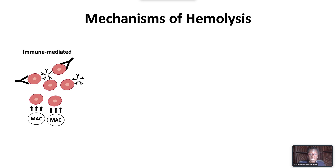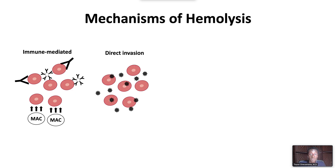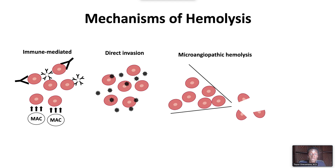Hemolysis can be immune-mediated, driven by IgG or IgM antibodies, or the membrane attack complex of the complement system. Hemolysis can occur with direct invasion of microorganisms or release of toxic substances. It can also occur due to microangiopathic hemolysis, in which there is blockage of the microvasculature such that red blood cells are destroyed when trying to pass through. It can also occur when red blood cells spontaneously break apart due to the fragility of the red cell membrane.